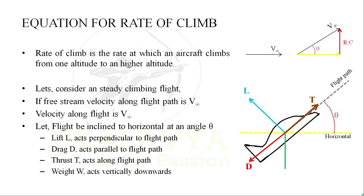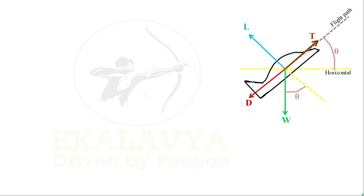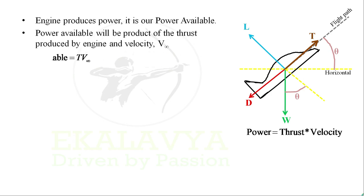We know thrust times velocity gives us power. In order for aircraft to fly, it requires power which is produced by engine - that is our Power Available. Power available will be product of thrust produced by engine and velocity V infinity.